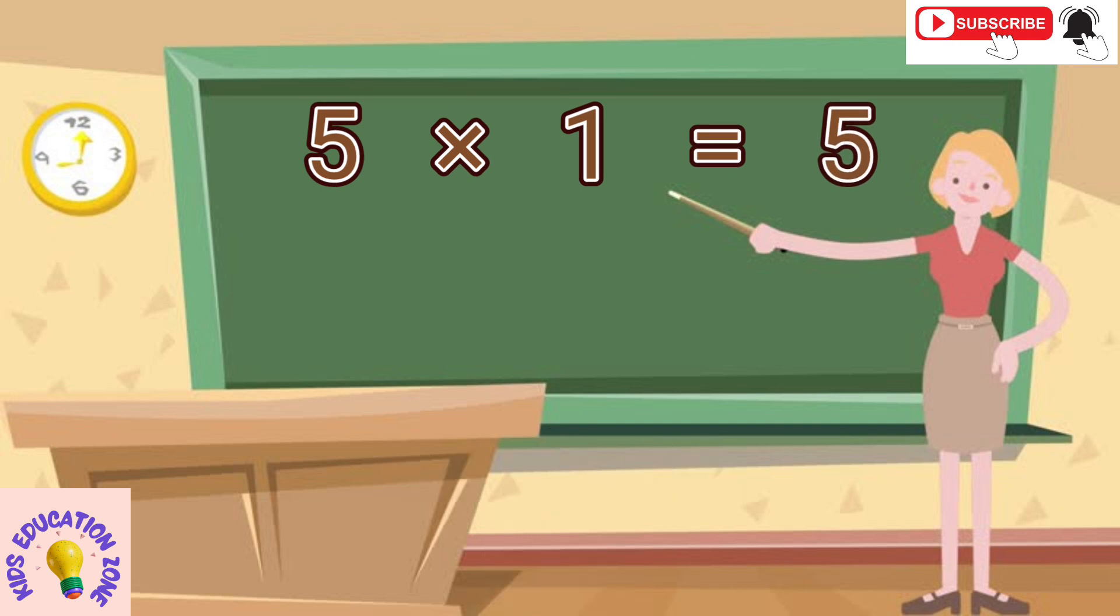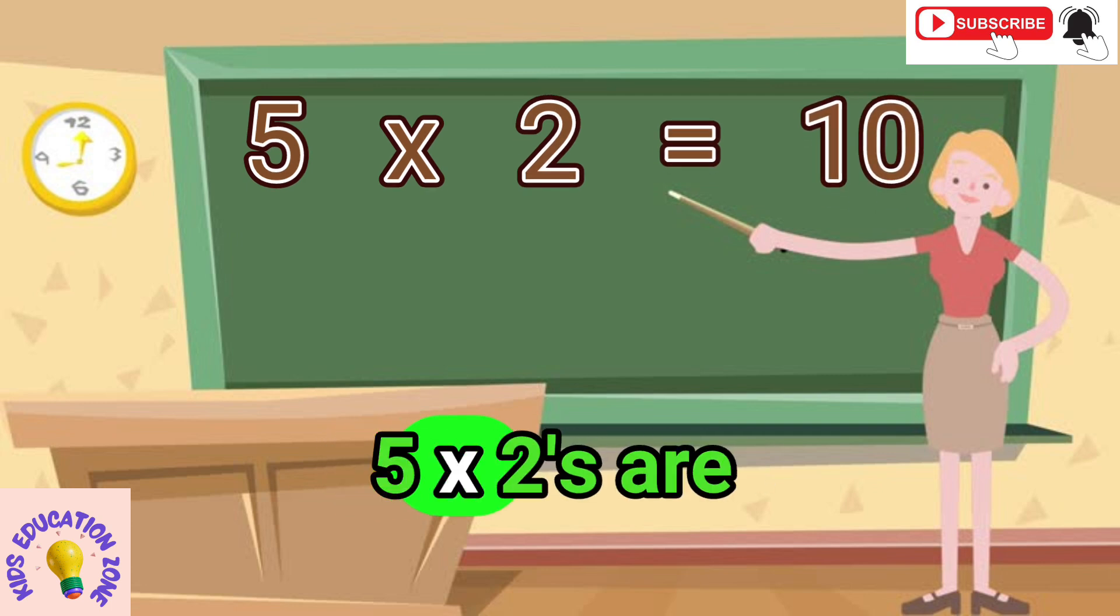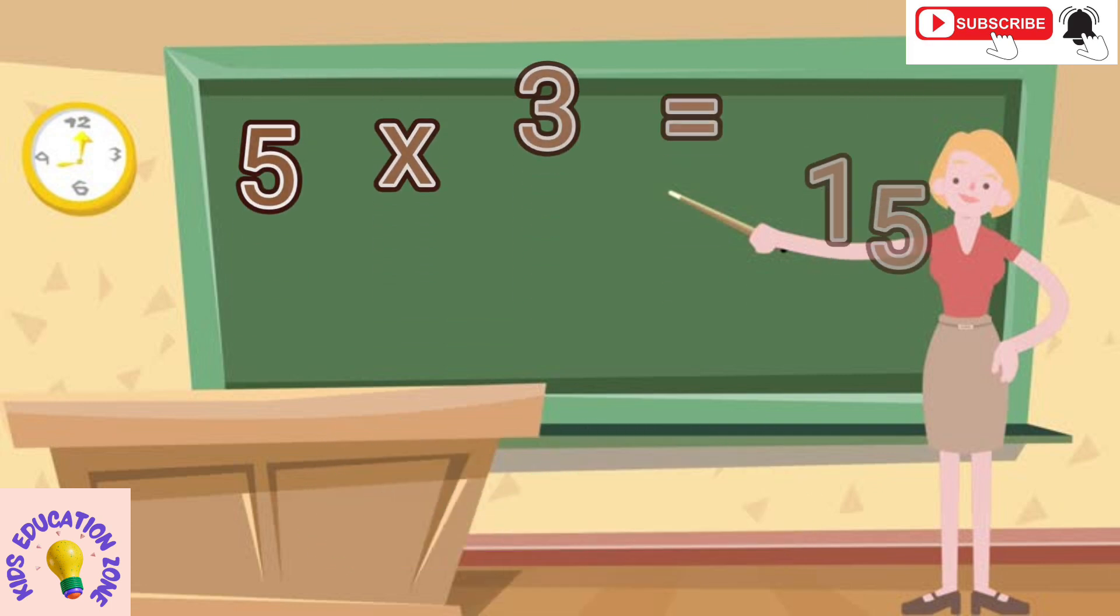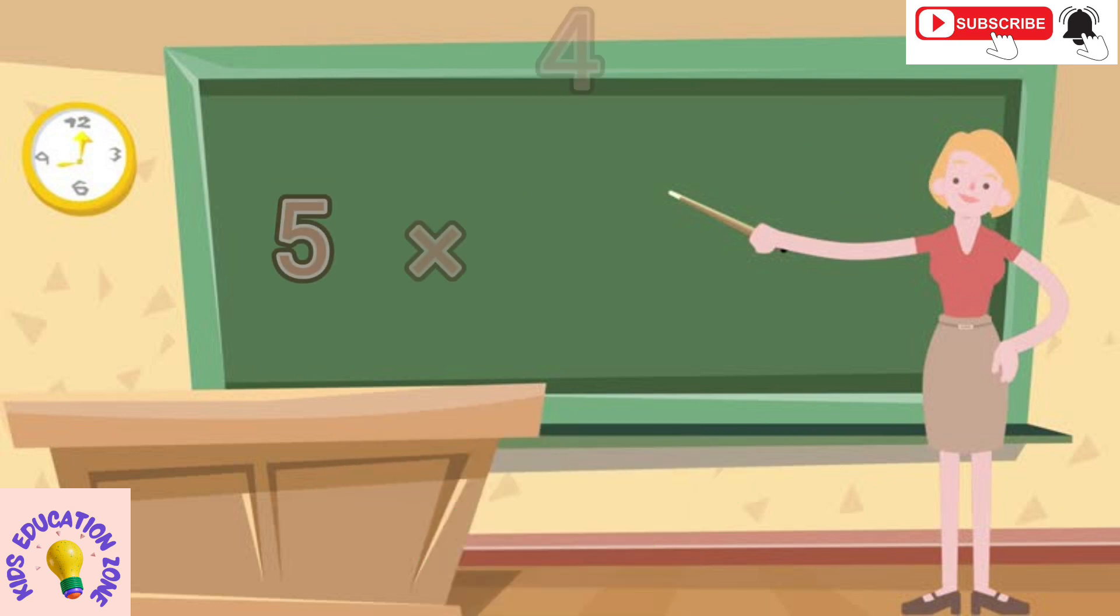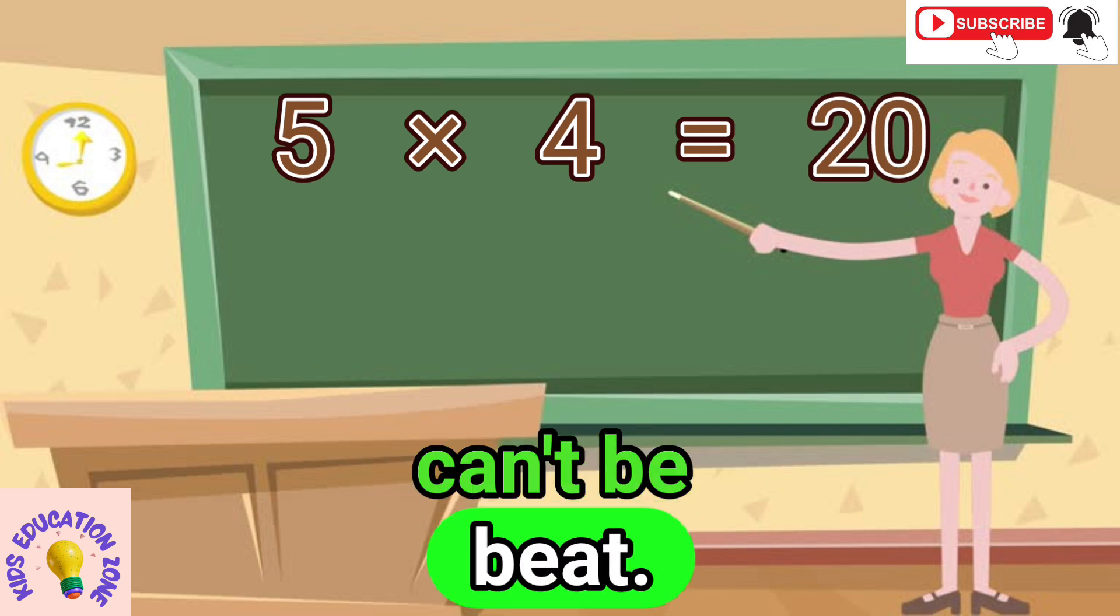5 1s are 5, high and proud 5 2s are 10, say it loud 5 3s are 15, nice and neat 5 4s are 20, can't be beat